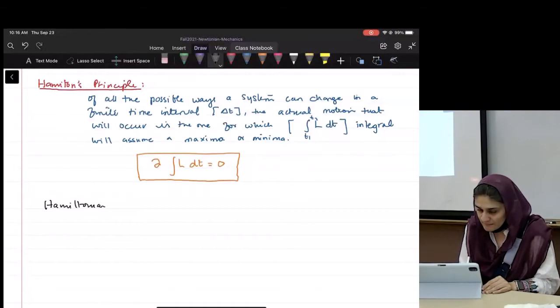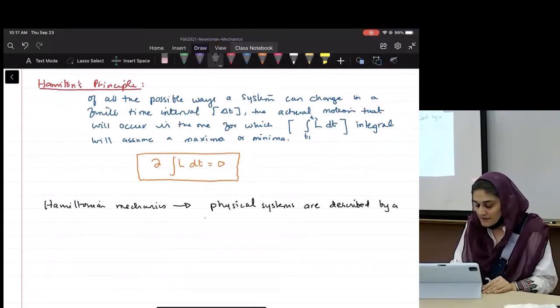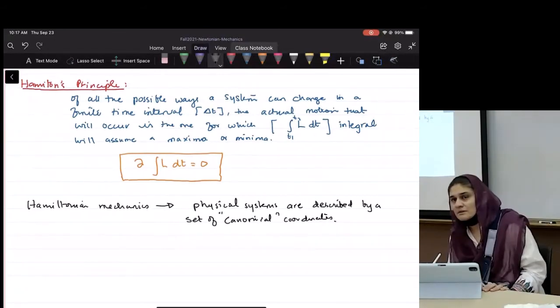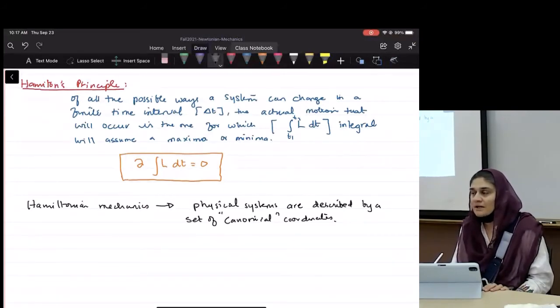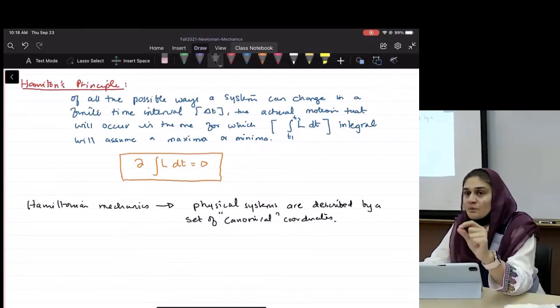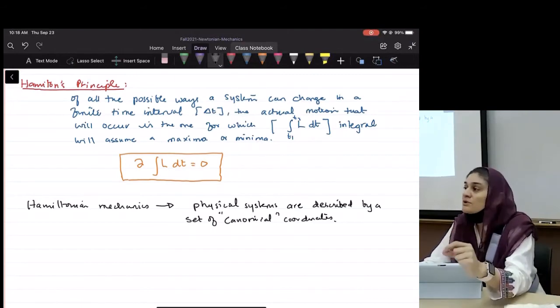So I'm going to introduce another term that may or may not be new to you. Hamiltonian mechanics. Physical systems are described by a set of canonical coordinates. No, it's canonical, not conical. You might have said it but I don't know. Okay, so canonical.